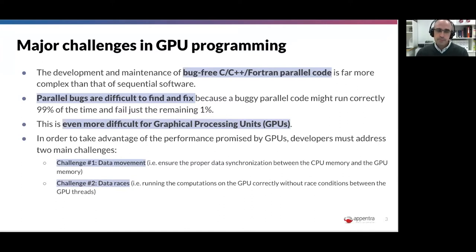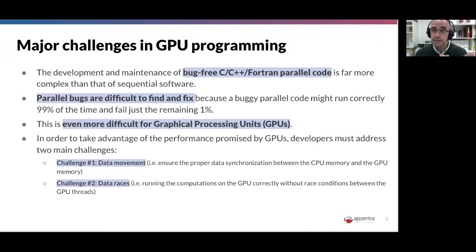Multi-core CPUs run different threads and all the threads can access all the memory. When you move to the GPU, you offload part of the computations to a different hardware chip, a different execution environment with its own processor and its own memory. You have at least two different memories to manage. You need to move data from the CPU host memory to the GPU memory, and move it back to collect results and continue execution on the CPU.